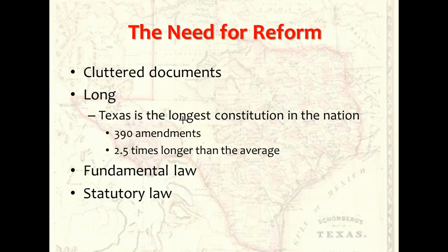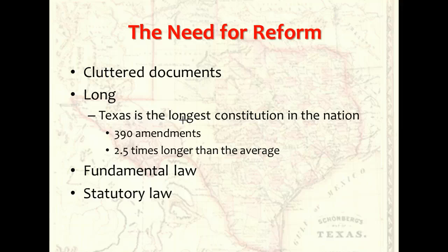Most state constitutions would be improved if the legislatures and the voters separated fundamental law, which should properly be in the constitution, from more routine statutory law, which can be passed by the legislature. The lines separating fundamental and statutory law may be blurry in some cases, but many provisions clearly do not belong in the state constitution. For example, California's constitution contains a ban on taxing fruit and nut trees planted within the past four years. Putting statutory provisions in the constitution makes the document unnecessarily long and complex, and obscures the important points of fundamental law that the constitution should showcase. It also makes it harder to make routine changes in governing law when they are needed.